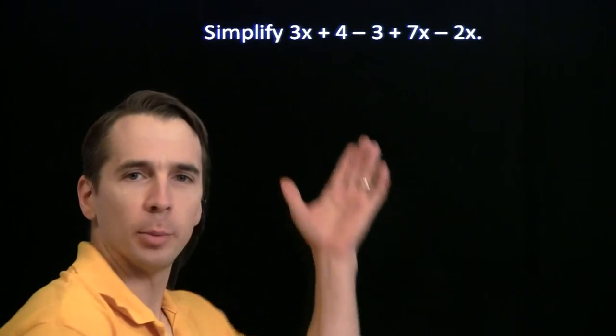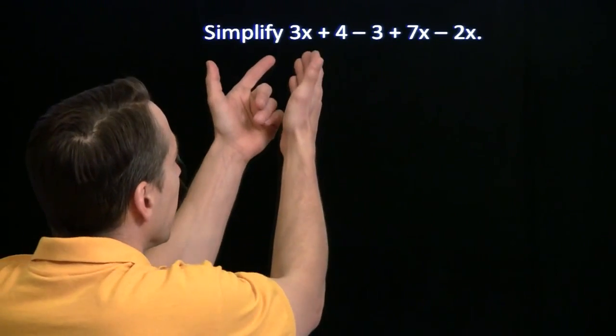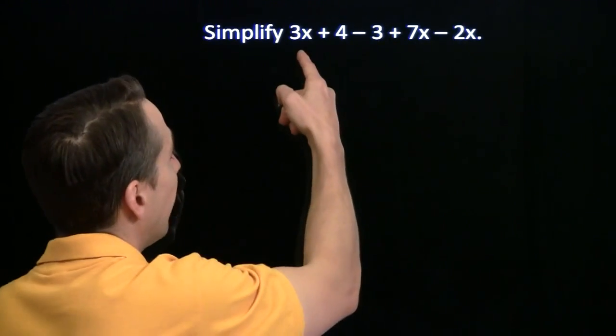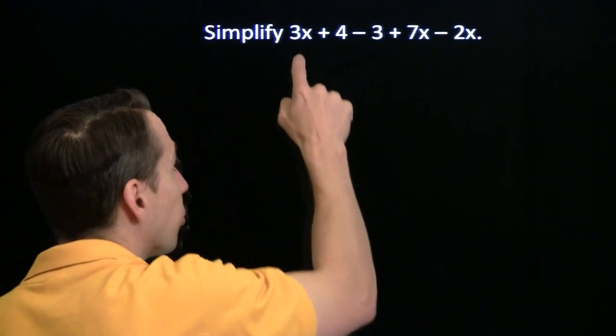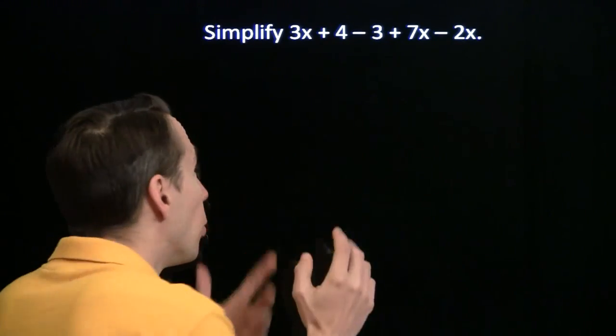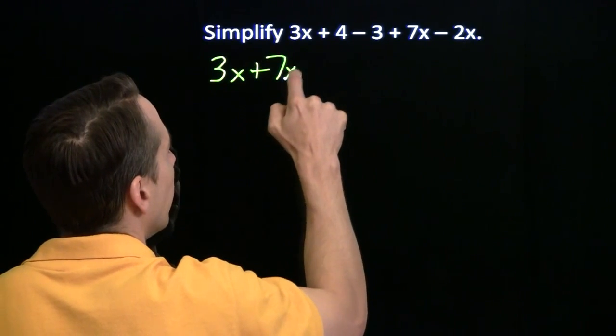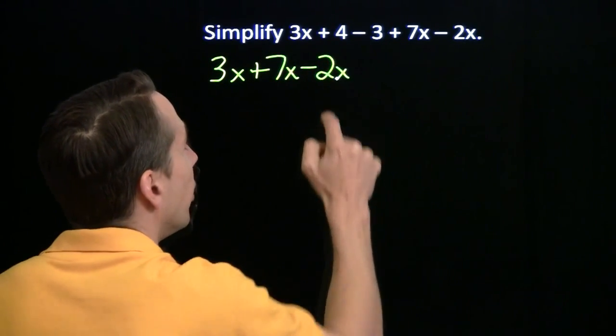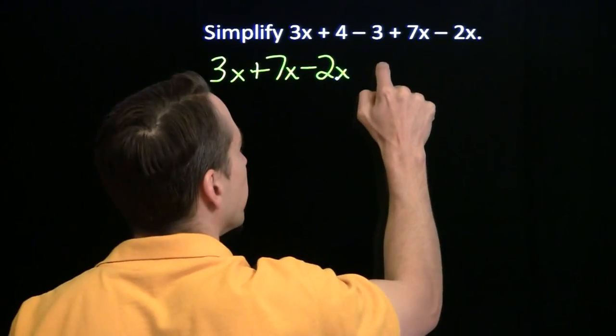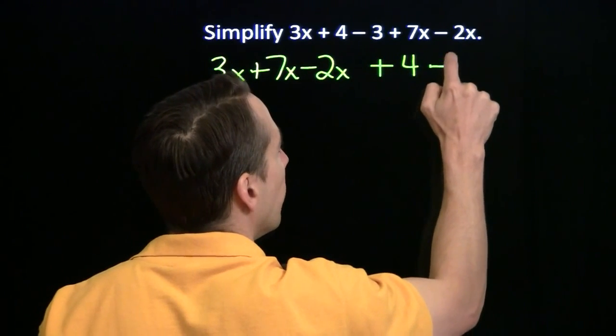We know how to simplify these one-variable expressions like this. We bring all the terms that have variables in them, the like terms—the 3x, the 7x, the minus 2x. We bring all those together. Right? This is 3x plus 7x minus 2x. And then we put the constants together over here: plus 4 minus 3.